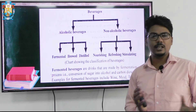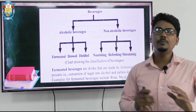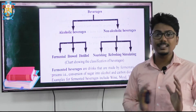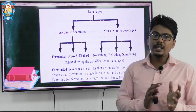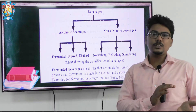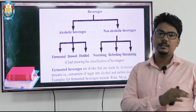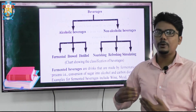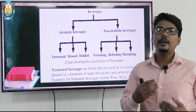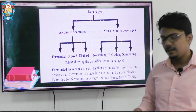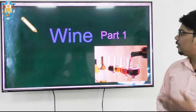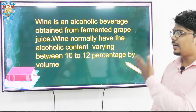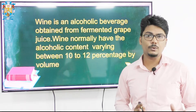Fermentation, as mentioned last day, is the process where sugar is converted into alcohol and carbon dioxide in the presence of yeast. When we carry out that fermentation process, we get a product that is known as wine. Wine is prepared from grapes, and here we are going to talk about wine now.